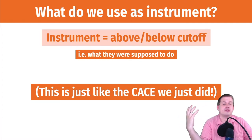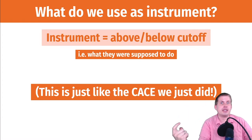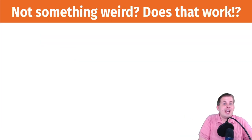And this is just like the complier average causal effect that we did in the previous section. It's the same principle. We're finding the effect of the program for just compliers. And again, this is not a weird instrument. It's not rainfall, it's not Scrabble scores, it's just an indicator that says you were above or below the threshold.